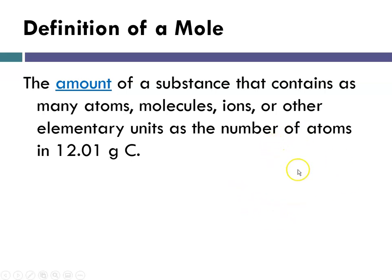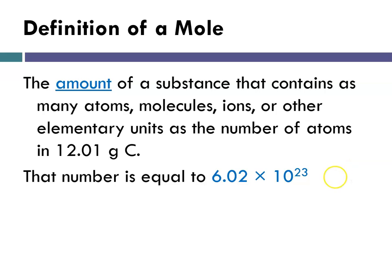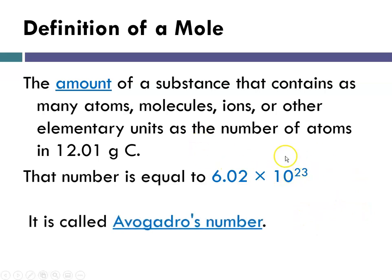The definition of a mole is the amount of a substance that will contain as many pieces, atoms, or molecules, as there are in 12.01 grams of carbon. And it turns out that if you have a sample of 12.01 grams of carbon, it contains exactly 6.02 times 10 to the 23rd atoms. And that number, 6.02 times 10 to the 23rd, is called Avogadro's number.